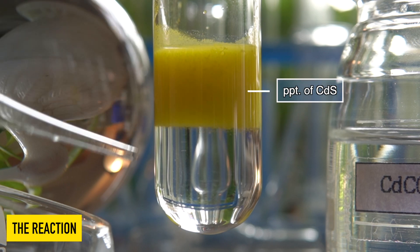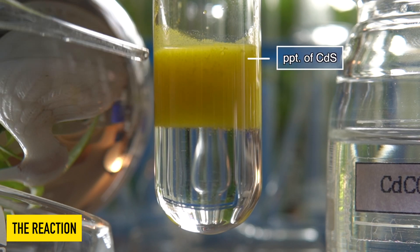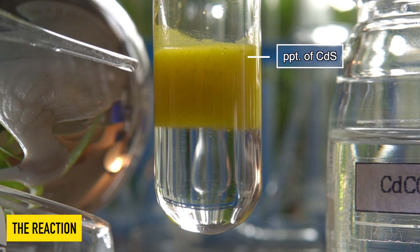The yellow insoluble precipitate that has been formed inside the test tube is nothing but cadmium sulphide.